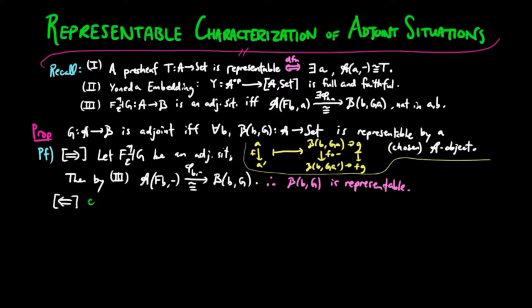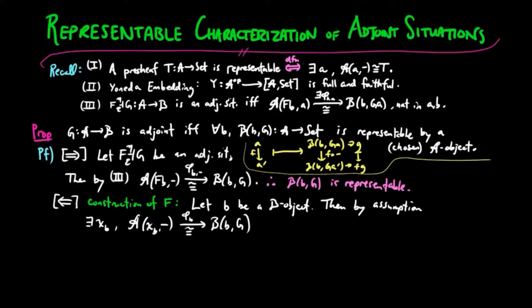Conversely, we need to construct a coadjoint F. So let B be a B object. Then by assumption, there exists an A object XB and a natural isomorphism phi B from the representable on XB to the pre-sheave B(B, G).